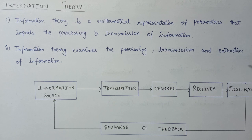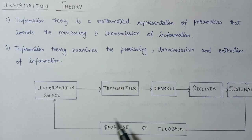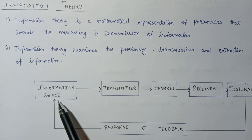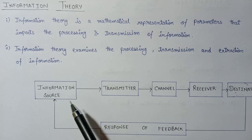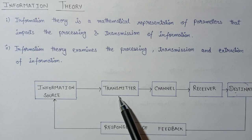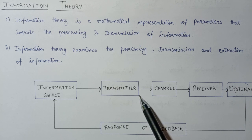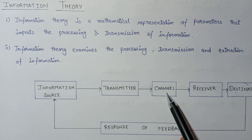Before talking about information theory in more depth, let us have a look at this block diagram representation of the transmission of information. In this scenario, first of all the information is being generated by the information source. Then after the generation of information it will be transferred to the transmitter, which processes that information and transfers it towards the channel.